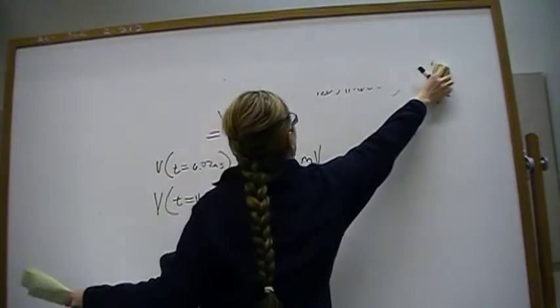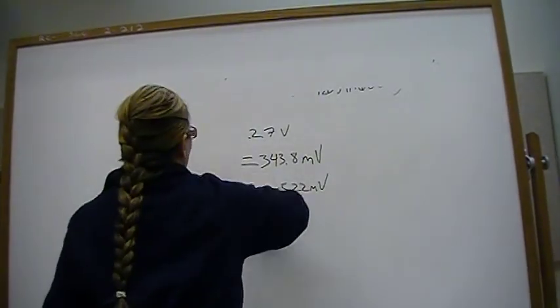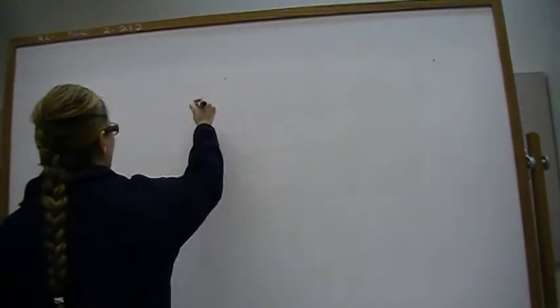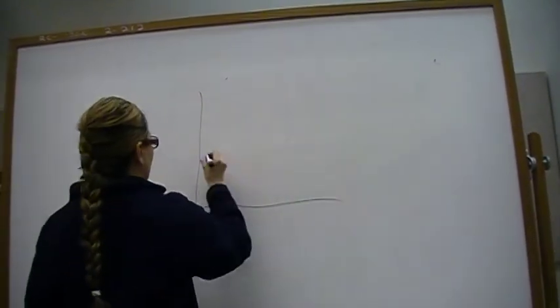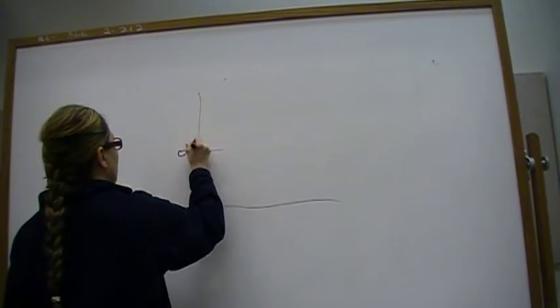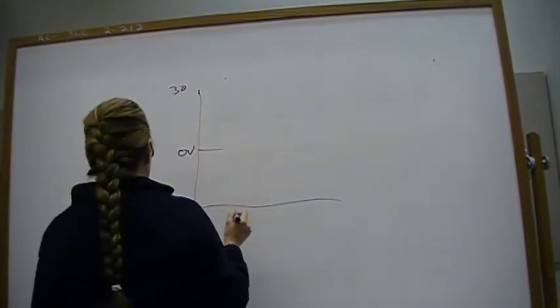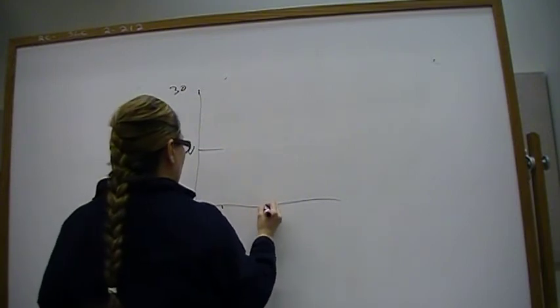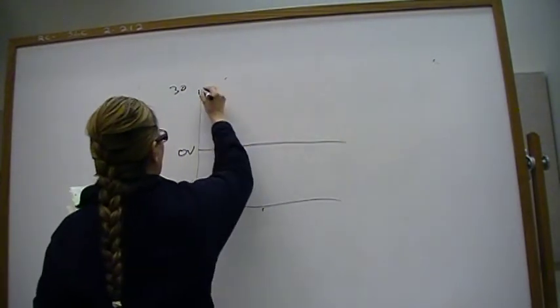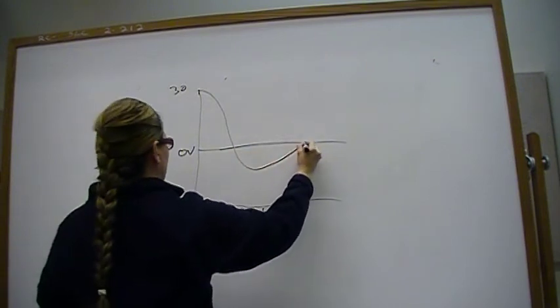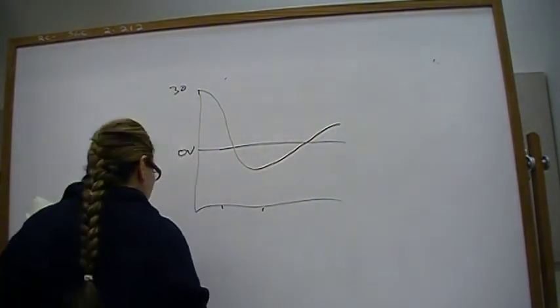So your sketch roughly looks like this. This is 0 volts, 30 volts. So we know we'll start out at 30 volts. And it's going to dip down and approach zero.